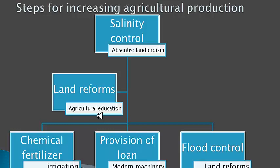Agricultural education is important. Our farmers and cultivators have a lack of education, especially regarding agriculture and science. The government should take steps to bring awareness among farmers and educate them so that modern technology and mechanization of agriculture can be made possible, and they can move away from traditional farming methods toward mechanization, increasing per-acre yield.